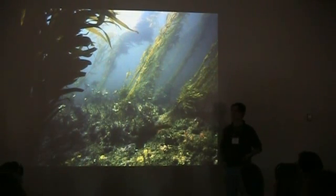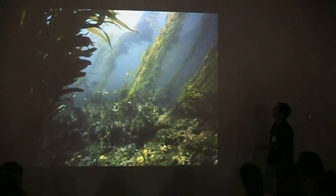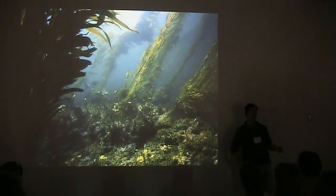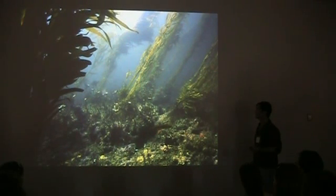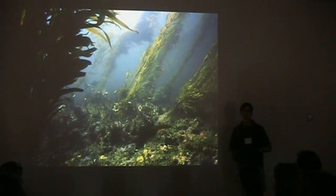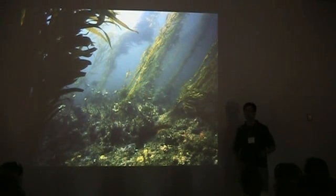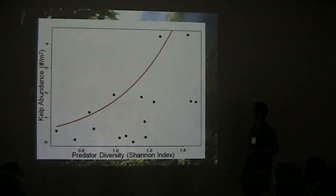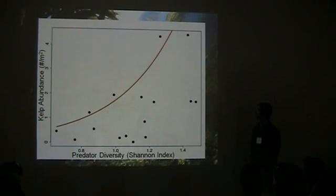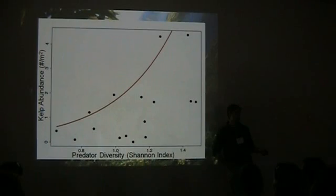I first looked at this question in kelp forests. For those of you who aren't familiar with the scale of this picture, this is about 30 feet. Kelp is this huge algae that forms forests along the Pacific coast and in a variety of other places around the world. I asked: what are the consequences of the loss of predator diversity for kelp? Kelp can buffer shorelines from wave action and provides incredibly important habitat for all of the other species that may be affected by climate change. I started by looking at surveys over several hundred square kilometers conducted over the past 20 years, and you can see that predator diversity in these kelp forests, over huge spatial and temporal scales, is positively correlated with the abundance of kelp. More species of predators, more kelp.